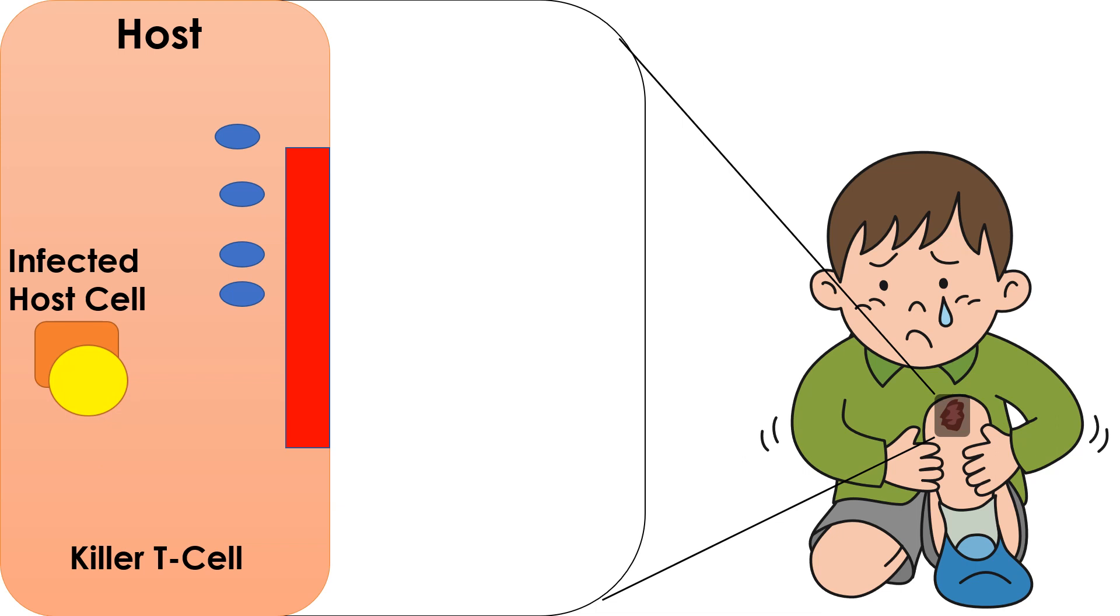Some T cells, called killer T cells, will start to kill infected host cells. Other T cells, called helper T cells, will activate B cells. The activated B cell will then replicate and release antibodies specific to antigens from the pathogen.